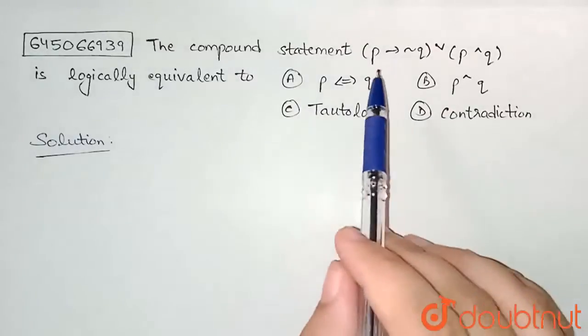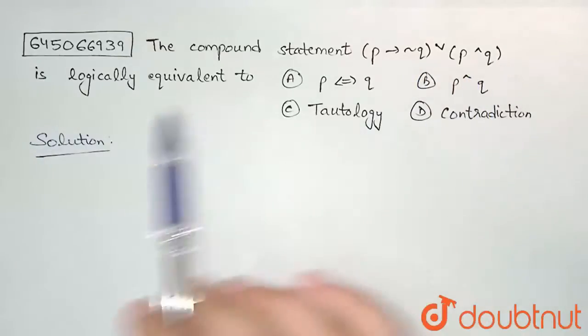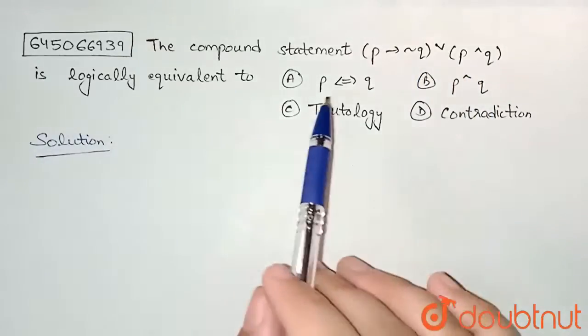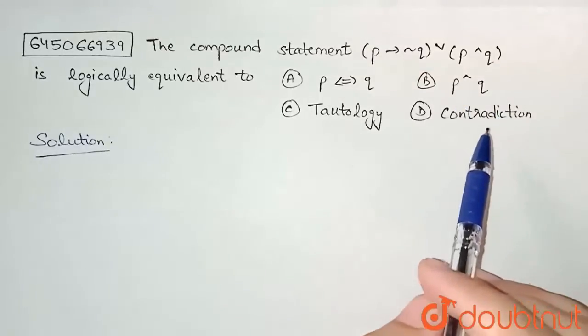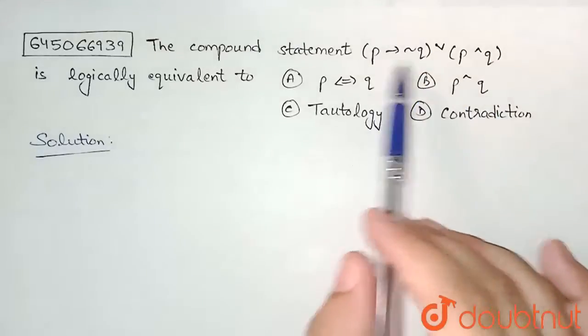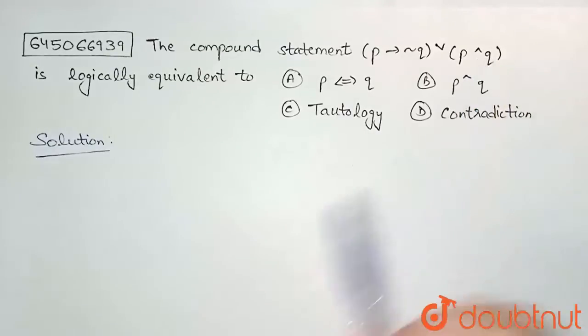The compound statement p implies negation q or p and q is logically equivalent to: p implies q, p and q, tautology, or contradiction. So we need to find what this statement is logically equivalent to. Let us draw a truth table.